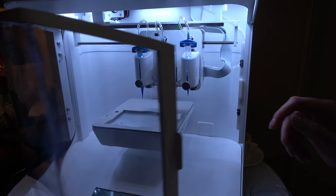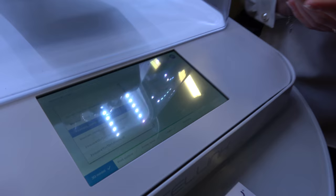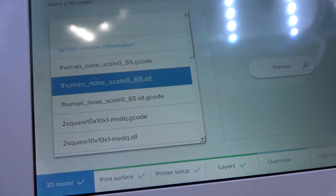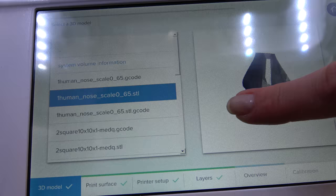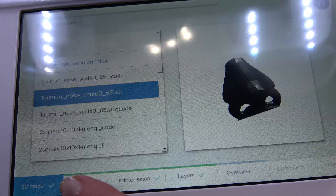So with the software you will choose a 3D structure that you would like to print. For example, if you want to print a small nose, you can have a look at the 3D structure that you want to print and see that you've chosen the right one. You can rotate it and see, yes, this is the one we want to print.